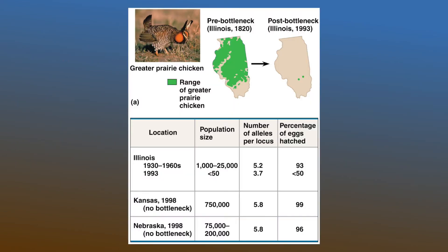The most common example of the bottleneck effect is the greater prairie chicken. Originally, there were millions of these chickens all around the United States, specifically in Illinois. Due to excessive hunting and the destruction of their habitats, the population went from millions down to just 50. This population experienced low levels of genetic variation — only 50% of their eggs actually hatched — which had a devastating effect on their ability to reproduce and sustain the next generation.